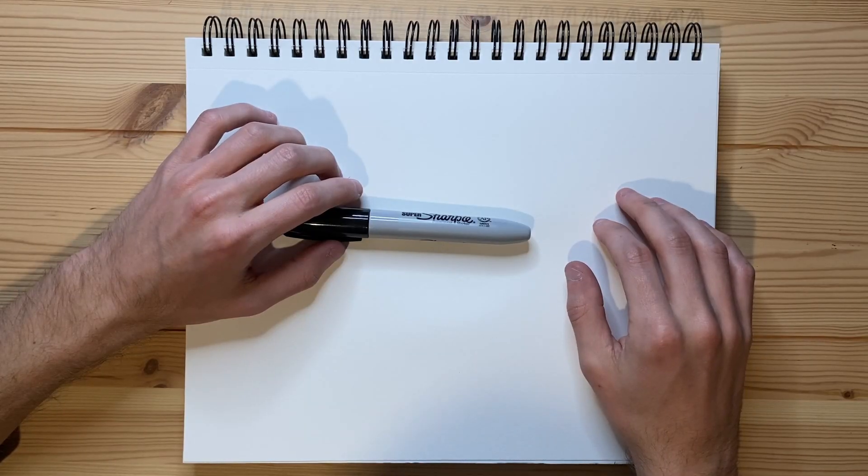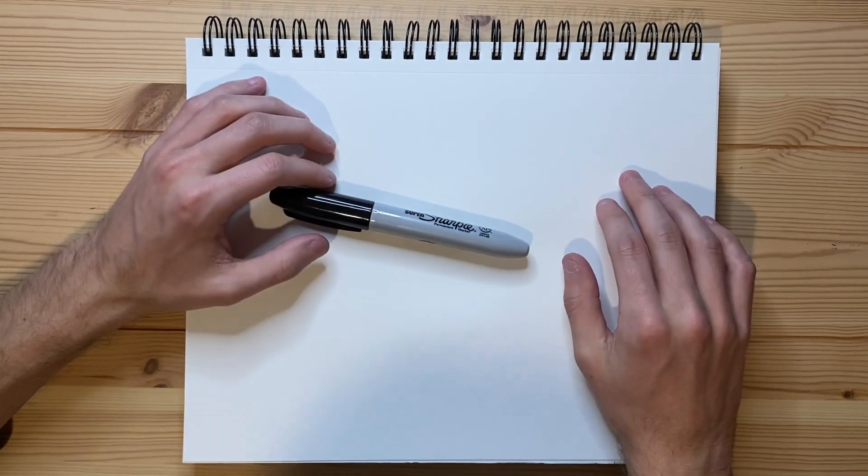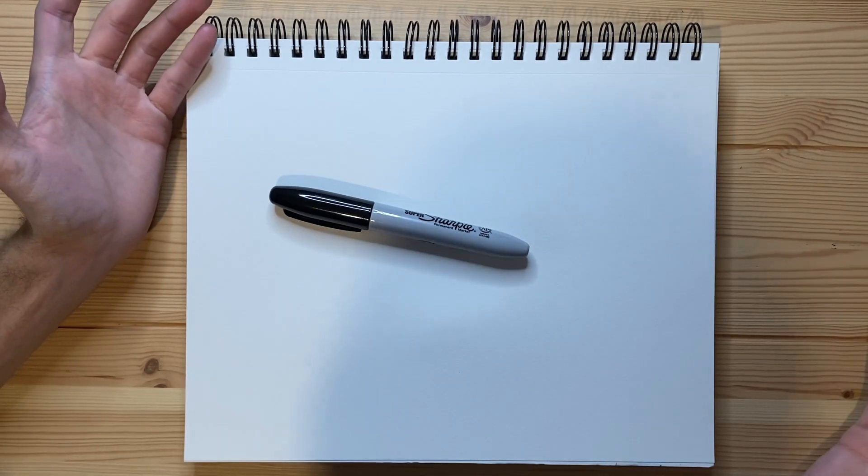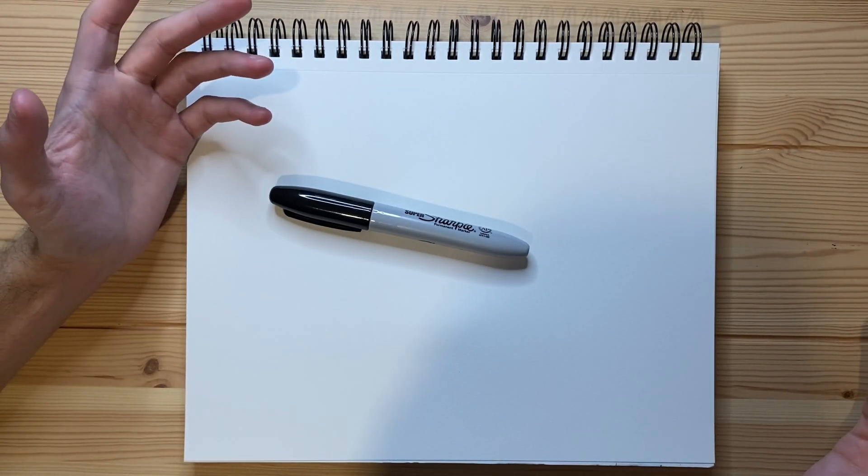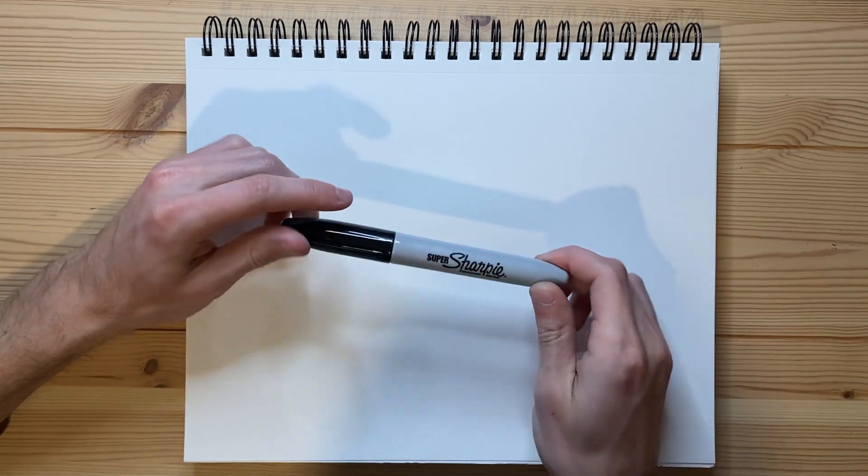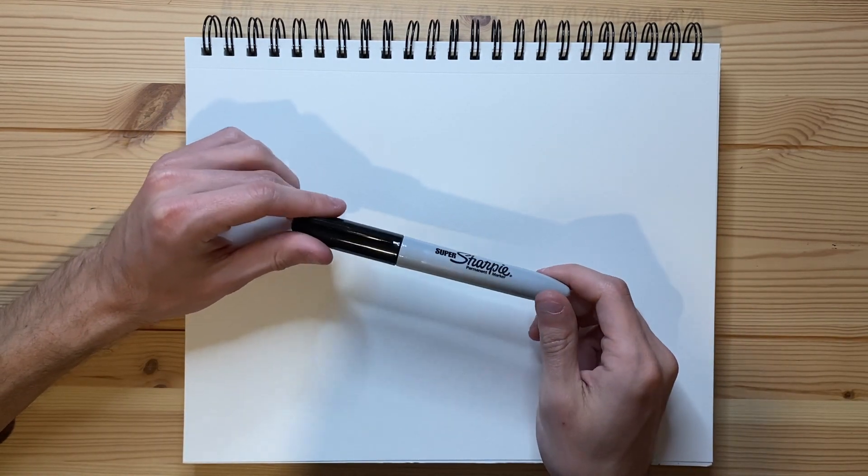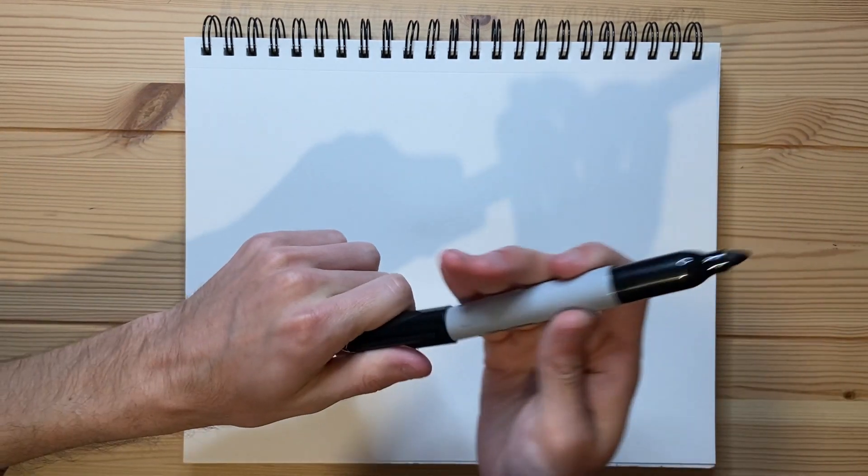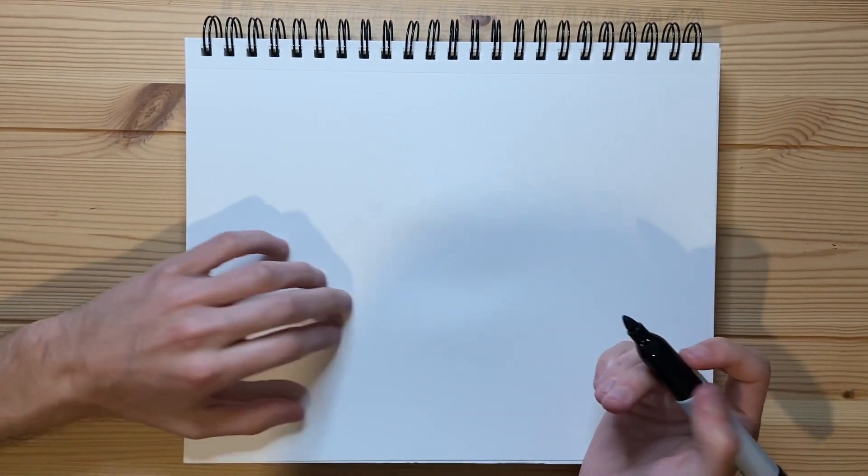Alrighty, so today I'm going to be drawing a group of balloons flying through the sky. That's the plan, at least. That's what I'm planning on drawing. Who knows? I could draw something different today, but I am planning on drawing a group of balloons flying through the sky. I'm going to be using a Sharpie to draw them today, and I think without further ado, let's go and get the cap off of my Sharpie right here, and let's go ahead and get right to drawing.